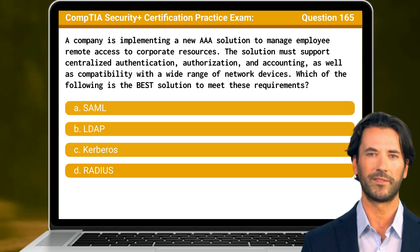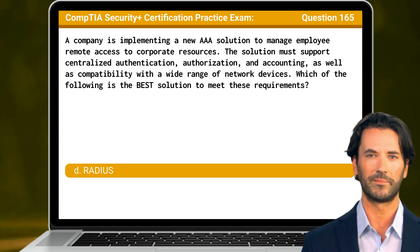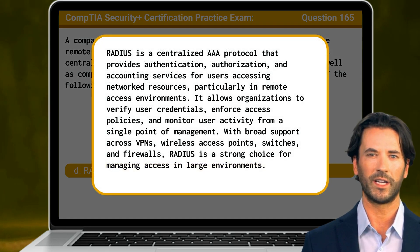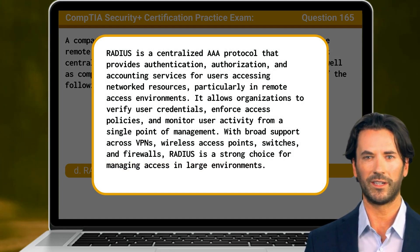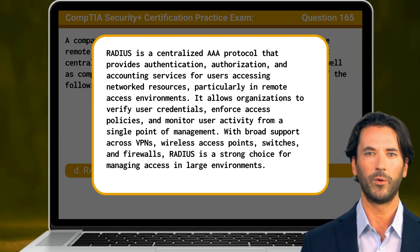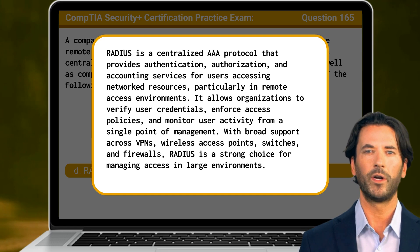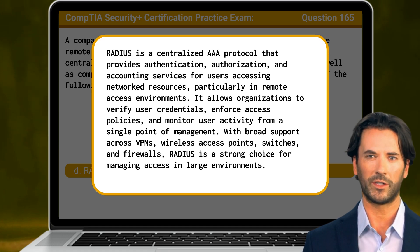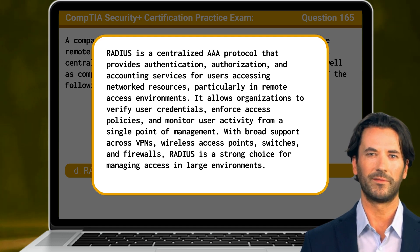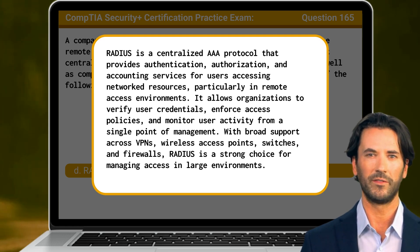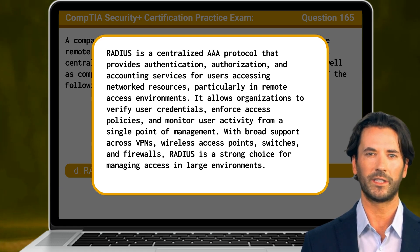The answer is D: RADIUS. RADIUS is a centralized AAA protocol that provides authentication, authorization, and accounting services for users accessing network resources, particularly in remote access environments. It allows organizations to verify user credentials, enforce access policies, and monitor user activity from a single point of management. With broad support across VPNs, wireless access points, switches, and firewalls, RADIUS is a strong choice for managing access in large environments.